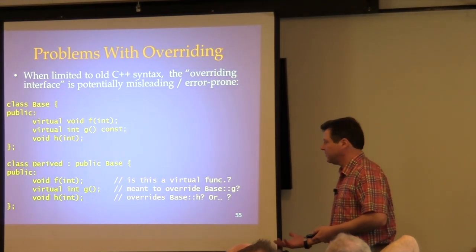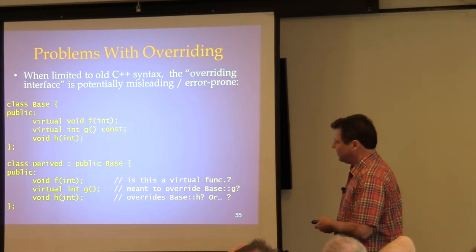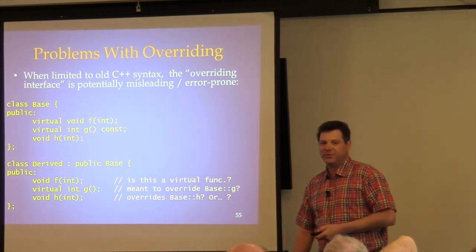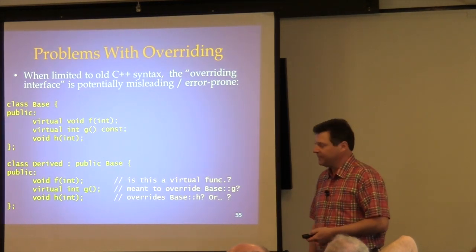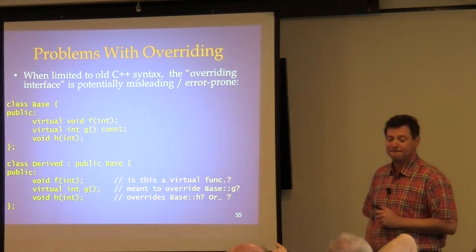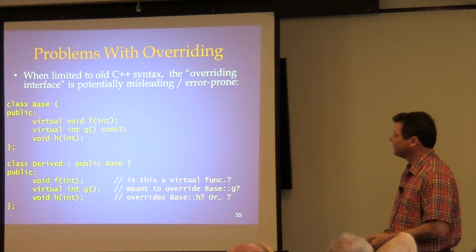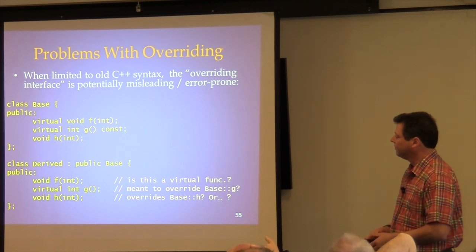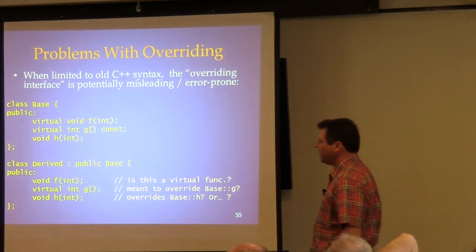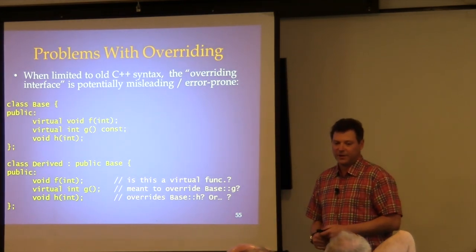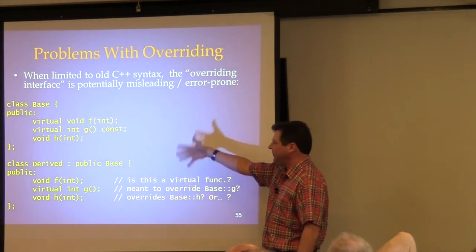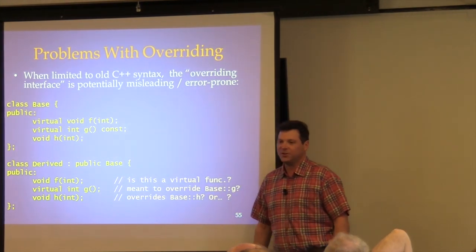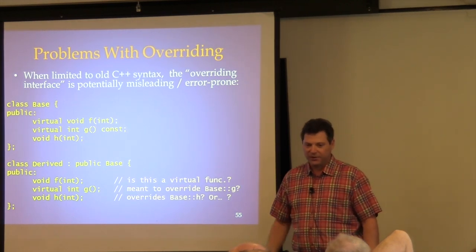Was this g meant to override base's g? Even if you knew base has a g, it won't override because the signatures differ — and you don't know what the person intended. What does this h do? Does it override base's h? No, because to override it has to be a virtual function. Having two h's is horrible design. If you think you're overriding but you're not, that's a serious mistake.